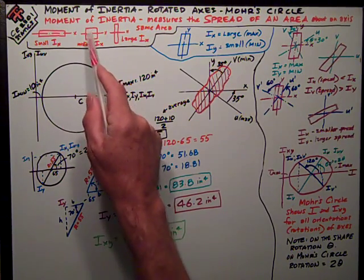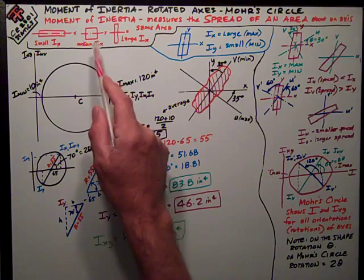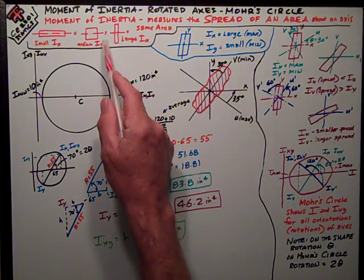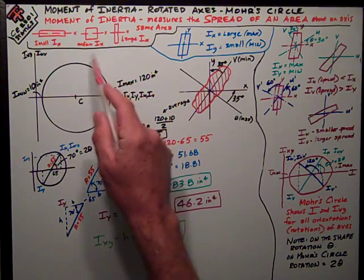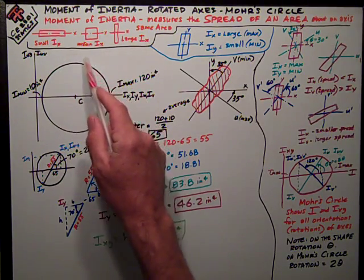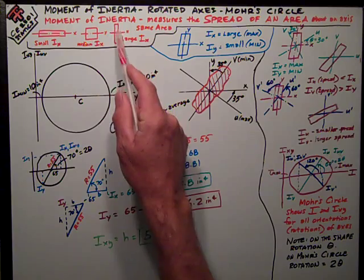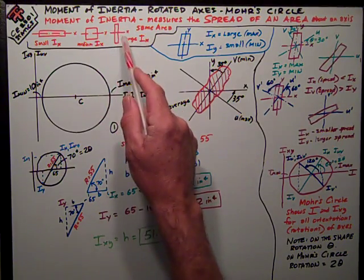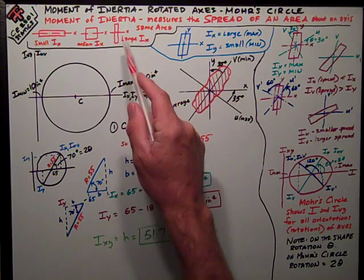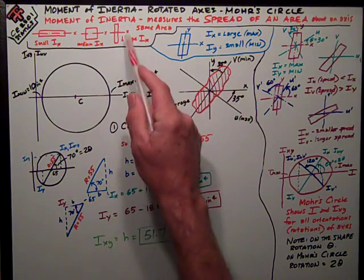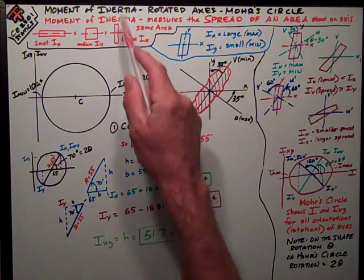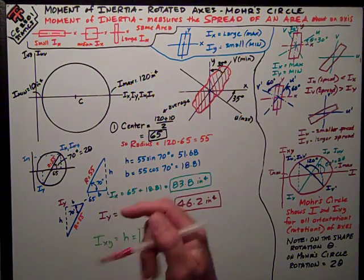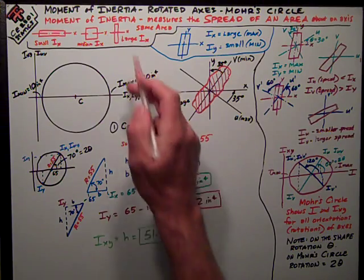The square would be a little bit more spread further away from the x-axis, so it would have the medium ix, larger than this one, but not as large as this final example three, where the area is spread considerably away from the x-axis. Parts of it are way far away, and it's going to have the largest ix, the largest moment of inertia about that x-axis.